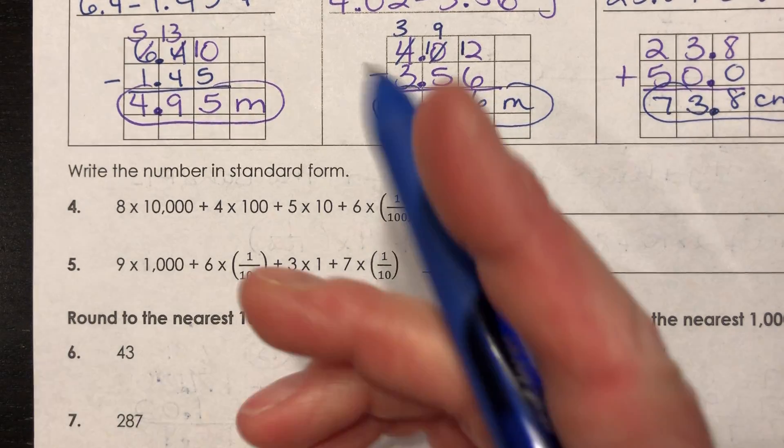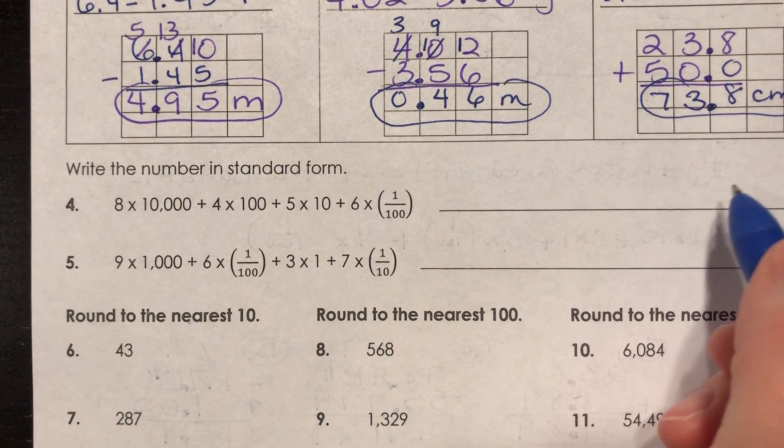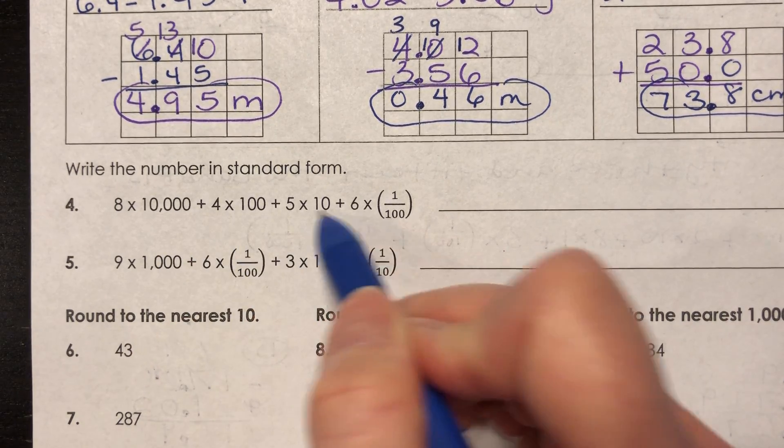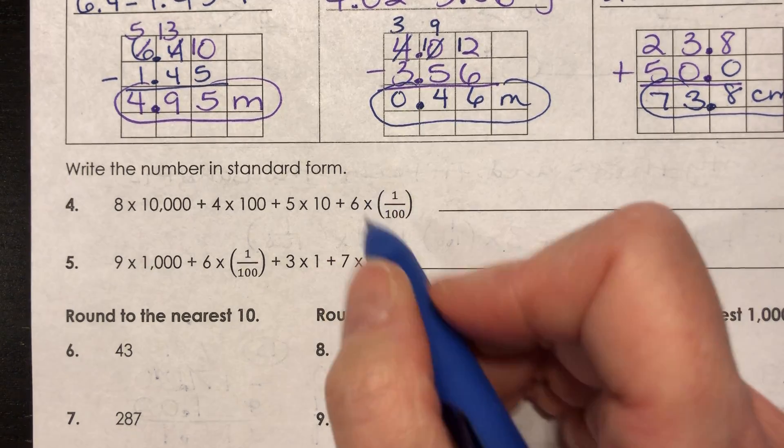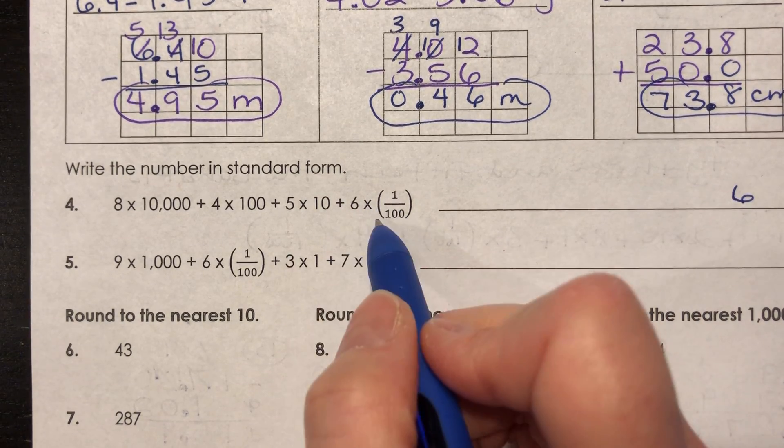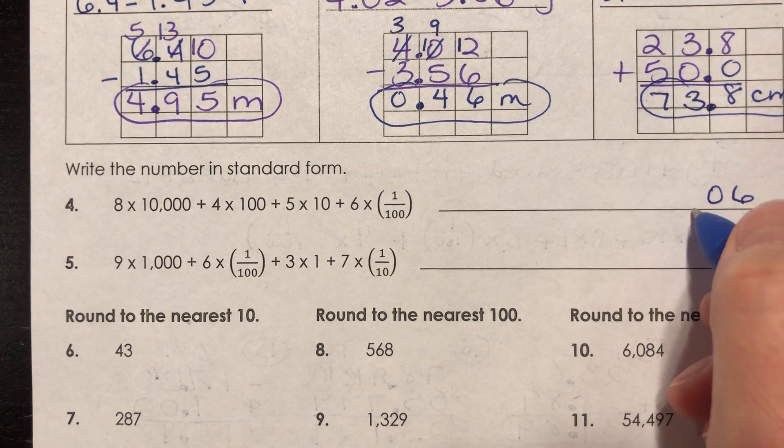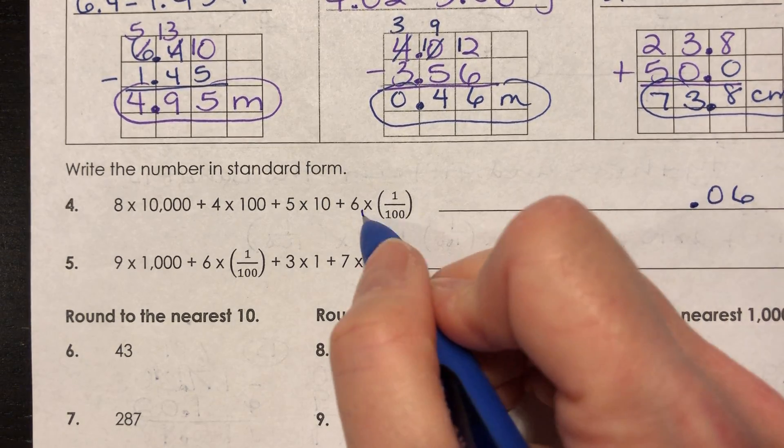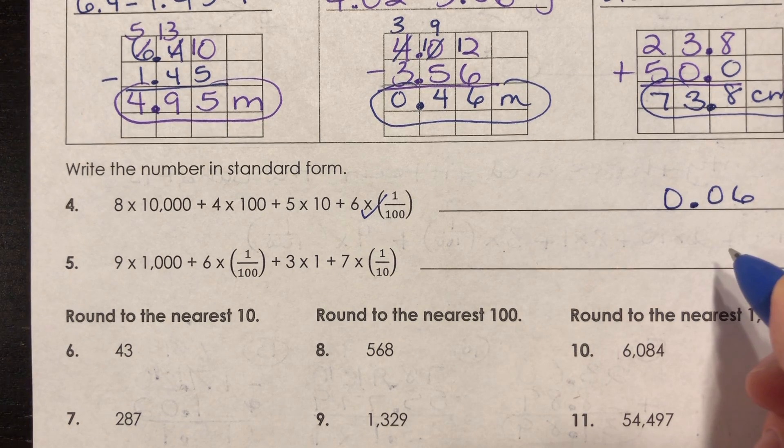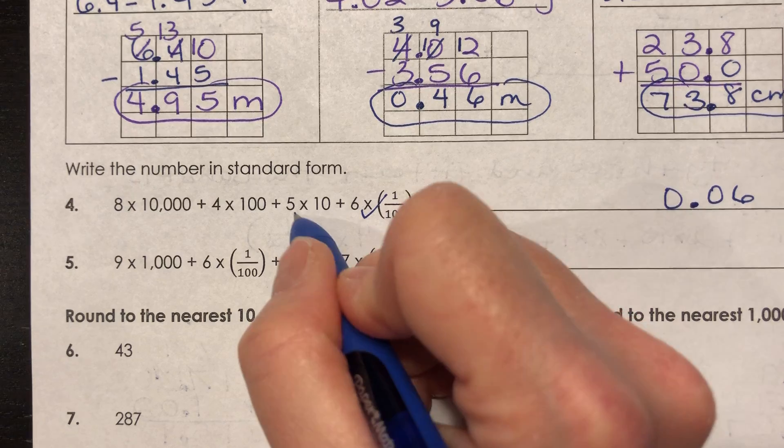Okay, we are on numbers four and five and for four and five we're supposed to write the number in standard form. So with these, this is where we want to start from right and work our way to the left. We want to look for the lowest place value. And in this case, I see one hundredth. I don't see one thousandth, so I'm gonna start with one hundredth. I'm gonna put a six in the hundredths place. Now the next one over would be the tenths and I don't see anything multiplied by a tenths, I'm gonna put a zero in the tenths place. And I know I need a decimal point in front of the tenths. So this is done so far. The next one over would be the ones place, and I don't see anything multiplied by one, so I would put a zero in the ones place.